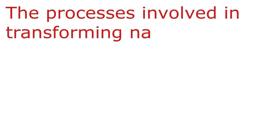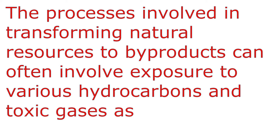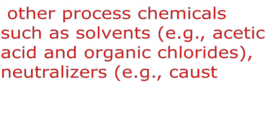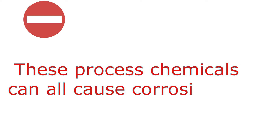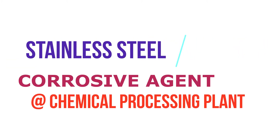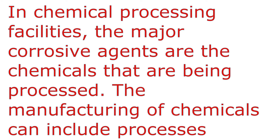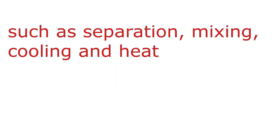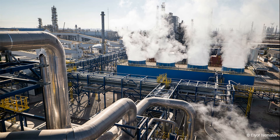The processes involved in converting natural resources to by-products can often involve exposure to various hydrocarbon and toxic gases, as well as other process chemicals such as solvents, neutralizers, and catalysts. These process chemicals can all cause corrosion. One of the most common petrochemicals produced is ethylene, which is converted from ethane in a facility called a cracker. In chemical process facilities, the major corrosive agents are the chemicals being processed. Manufacturing processes can include separation, mixing, cooling, and heating — with separation further subdivided into extraction, filtration, settling, distillation, precipitation, drying, and many others.